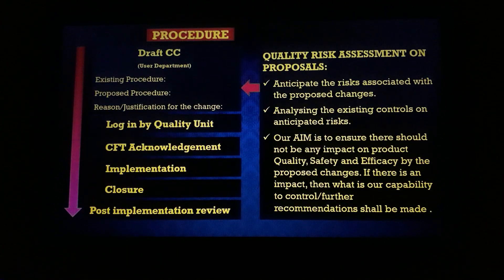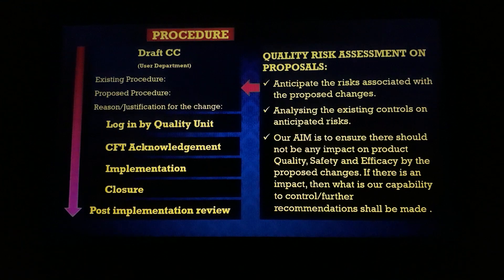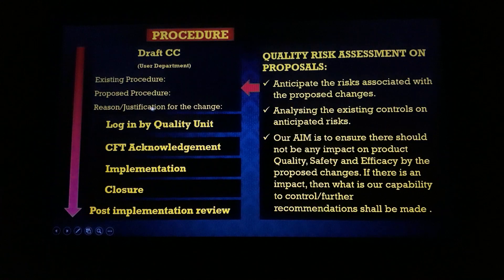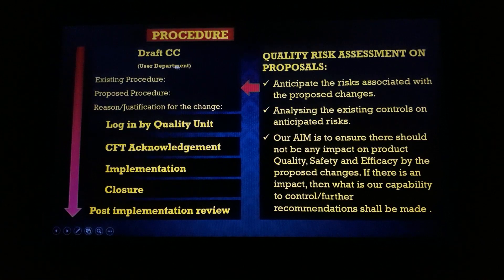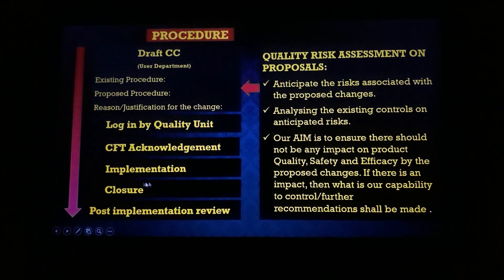Regarding the change control procedure: in a facility there are many departments, and a change may relate to any aspect — process, people, facility, or document. The user department must draft the change control, writing up the existing process, the proposed process, and the reason for the change. They then forward it to the quality unit for login, and the quality unit sends the change proposal to cross-functional teams for acknowledgement and review.